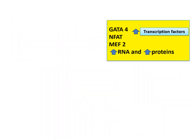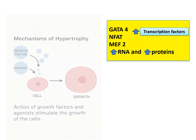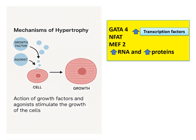What is the mechanism of hypertrophy? The ultimate mechanism is increased protein production causing increased growth. This protein production is under the stimulus of growth factors and agonists acting on the cell, causing increased transcription factors like GATA4, NFAT, and MEF2, which cause further increased RNA and proteins, thereby causing increased growth.